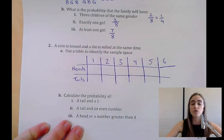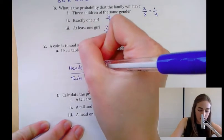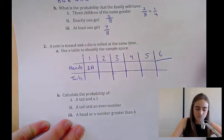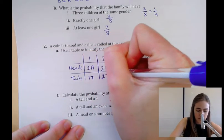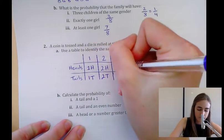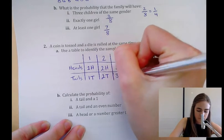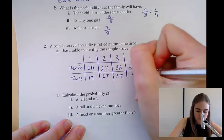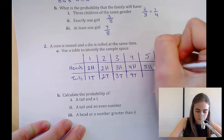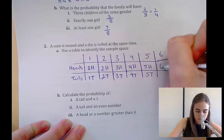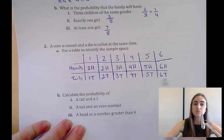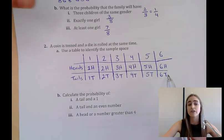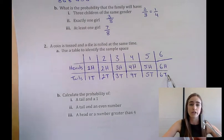Now we can go through and list all the possible outcomes. We could get a one and a head, or a one and a tail, two and a head, two and a tail, all the way through. So there are 12 possible different outcomes when we roll the die and toss a coin at the same time.